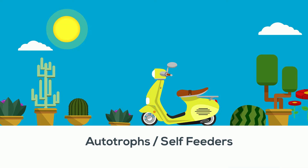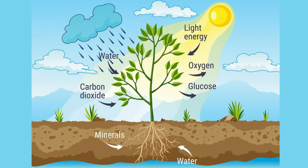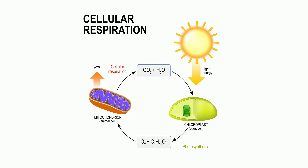Plants combine carbon dioxide, water, and sunlight to produce oxygen and glucose in a process called photosynthesis. The glucose is then used to create ATP during cellular respiration.